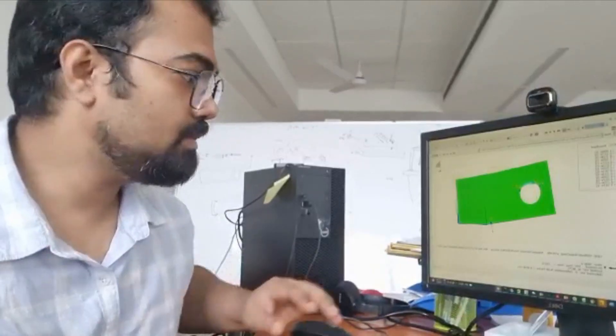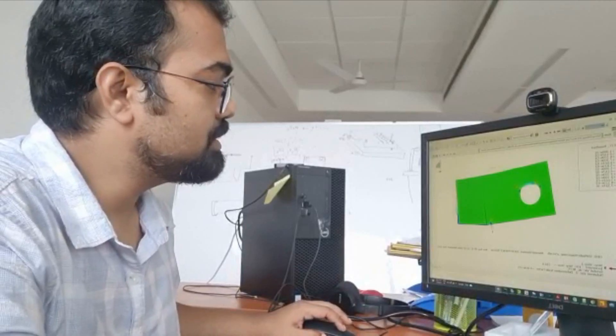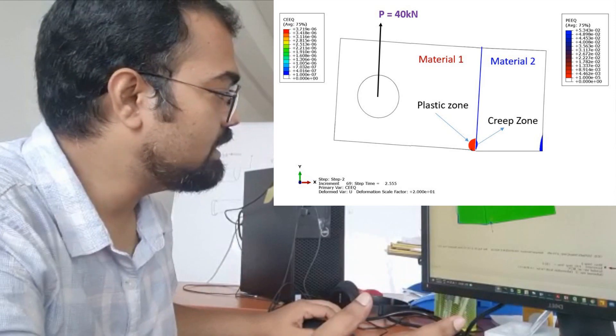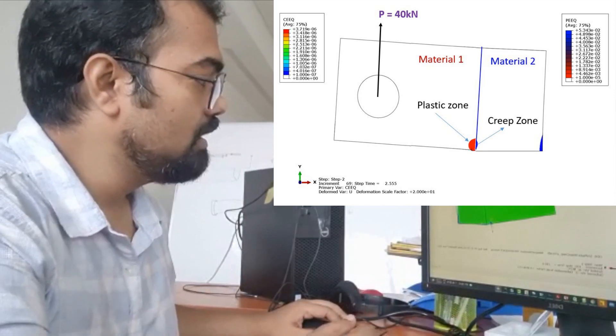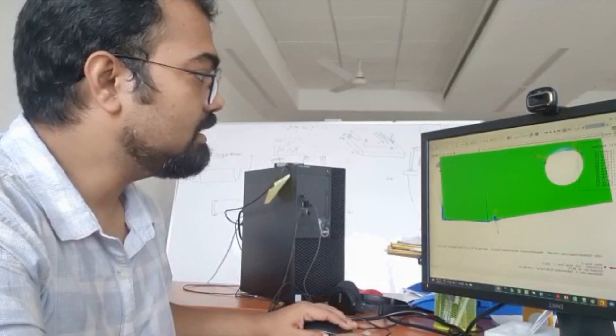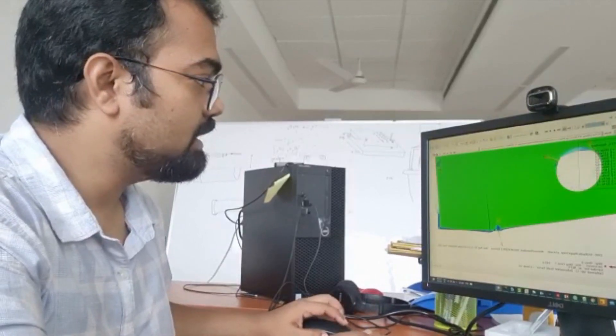So here what we are doing is we are analyzing material transition from elastic-plastic material on the left-hand side to elastic-creep material on the right-hand side. And the arrows which you are seeing, you will see these arrows on the interface where the material transition is happening.